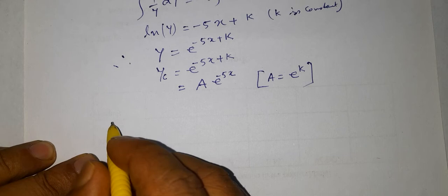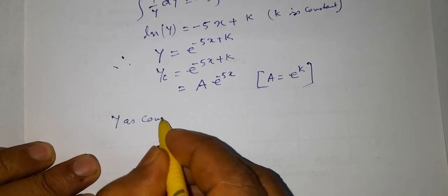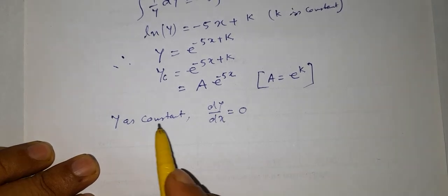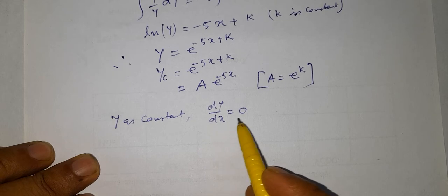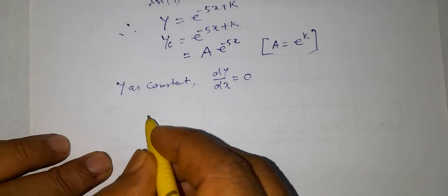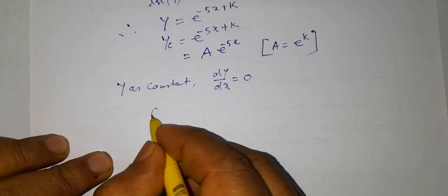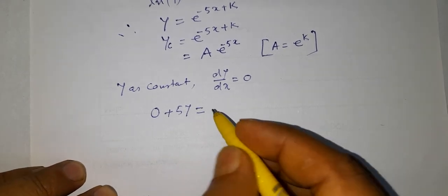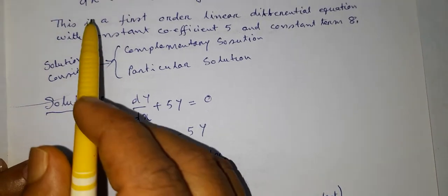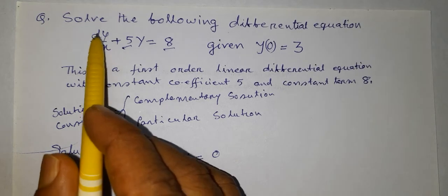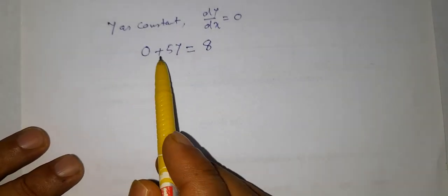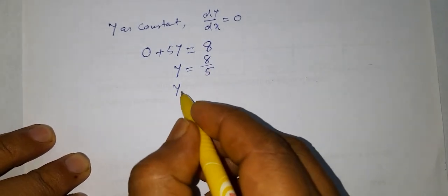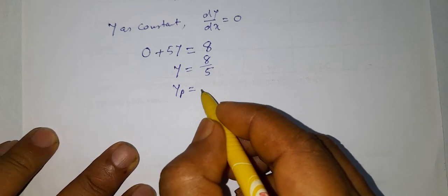The particular solution is obtained by considering y as constant, so dy/dx equals 0. Substituting into the differential equation, instead of dy/dx we write 0, giving 0 plus 5y equal to 8. Therefore y equals 8/5, so the particular solution yp is equal to 8/5.